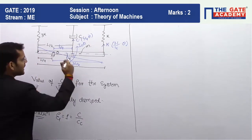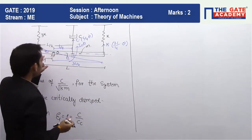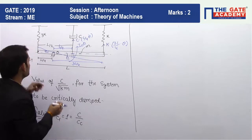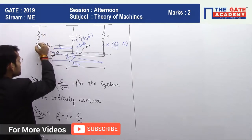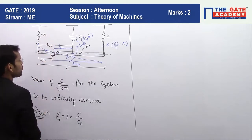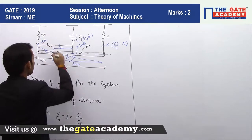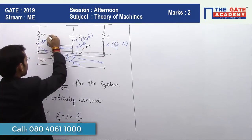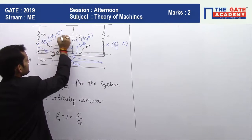For the second spring with stiffness 3k: when the bar has angular displacement theta, this spring undergoes compression. The spring is compressed by the radius multiplied by the angle, which is L/4 multiplied by theta. Since the spring force acts opposite to displacement — displacement is upward so the spring force acts downward — its magnitude is 3k multiplied by L/4 multiplied by theta. This is our second spring force.